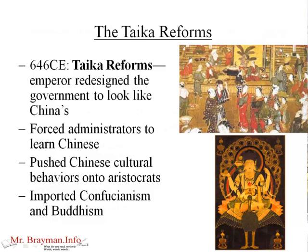Beginning our study of Japan and their earliest influence under Chinese leadership, we go back to 646 CE and the so-called Taika reforms. The emperor of Japan redesigned the whole government to look like China's — he saw the Chinese government as the model to follow. He forced his administrators to learn Chinese, got his aristocrats to dress and speak Chinese, they learned to write in Chinese, which is not applicable to the Japanese language, and he imported Confucianism and Buddhism, trying to make them the state religions.